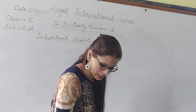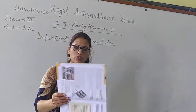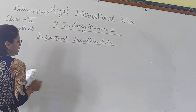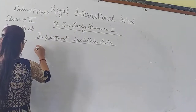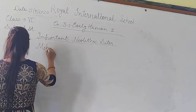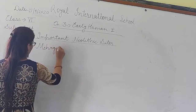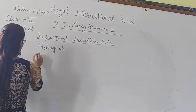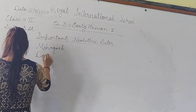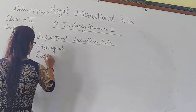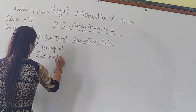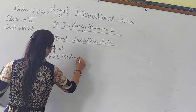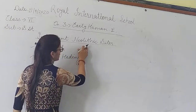On page 28, important Neolithic sites: we will study two sites. The first is Mehrgarh, and the second is Daojali Hading. These were two different sites of the Neolithic period.